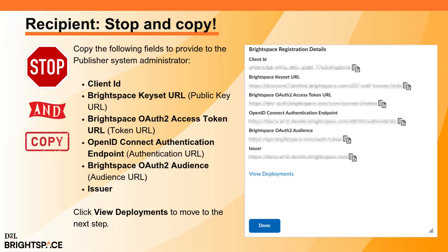You must provide the Publisher System Administrator with required information. From the Brightspace Registration Details dialog, copy the following: Client ID, Brightspace Keyset URL, Brightspace OAuth2 Access Token URL, OpenID Connect Authentication Endpoint, Brightspace OAuth2 Audience, and Issuer.